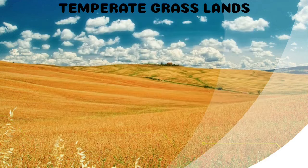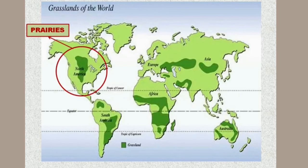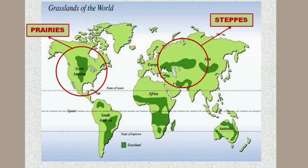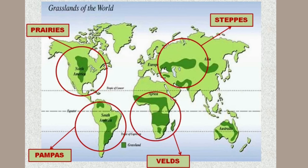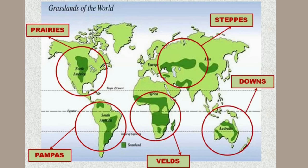Let's see the different grasslands of the world. They have different names in different parts of the world. The grasslands found in North America are called prairies. Steppes are the grasslands found in Eurasia, that is Europe and Asia. The grasslands found in South America are called pampas. Veld are the grasslands found in South Africa. And finally, the grasslands found in Australia are called Downs.